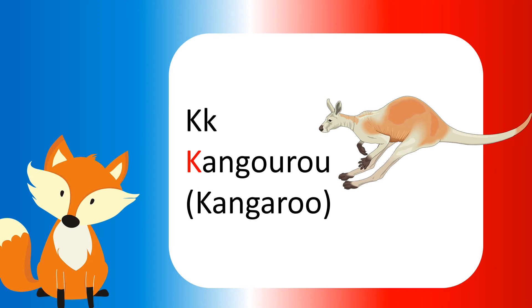Écureuil means squirrel in English, but there is some spelling change. In French, G-A is like G-O-U and R-O-O is like R-O-U.